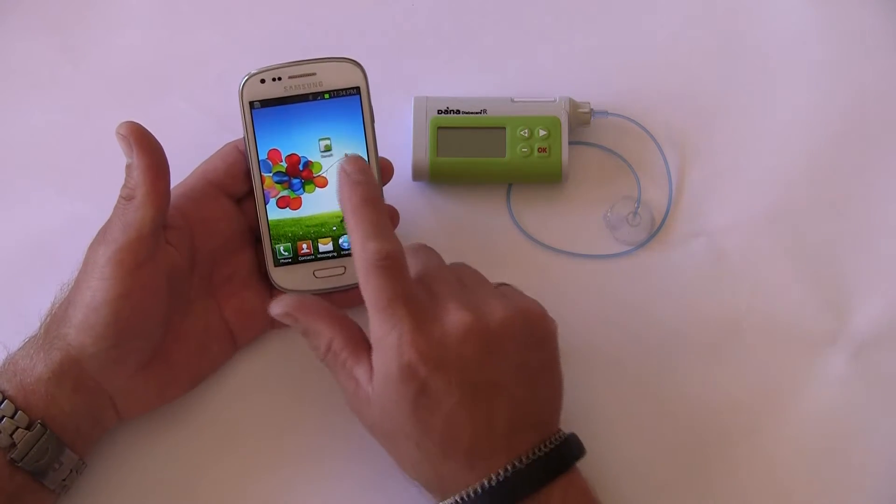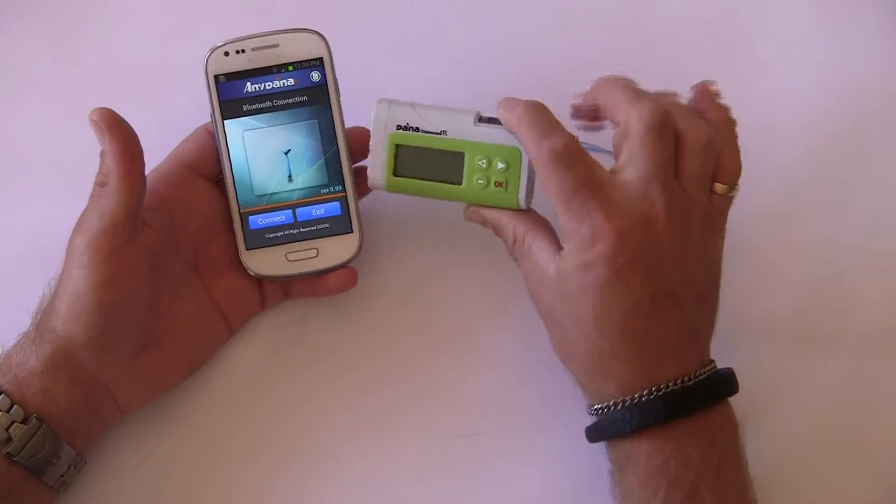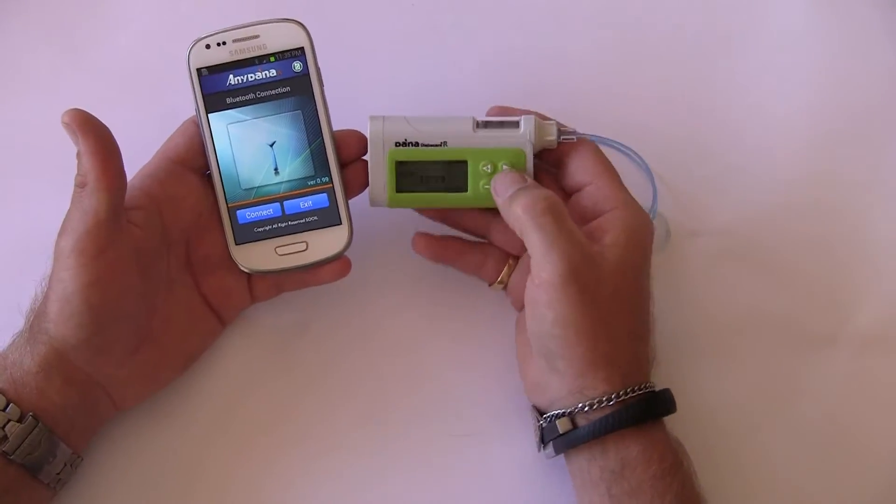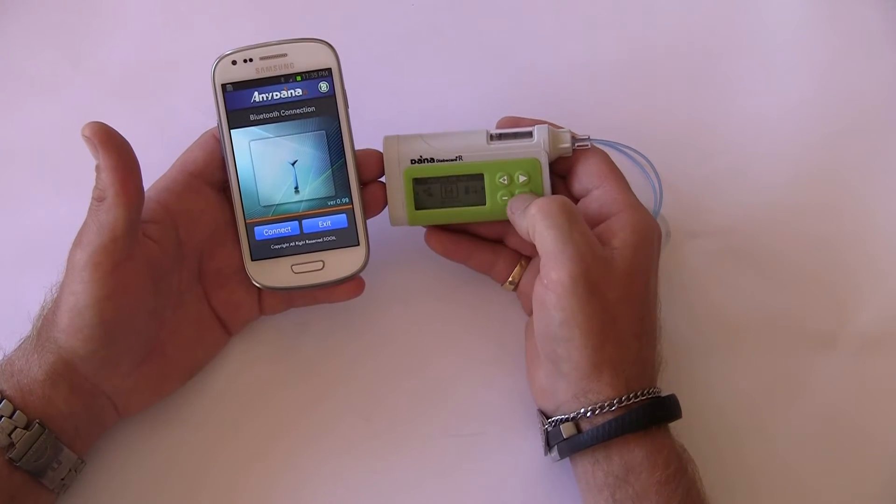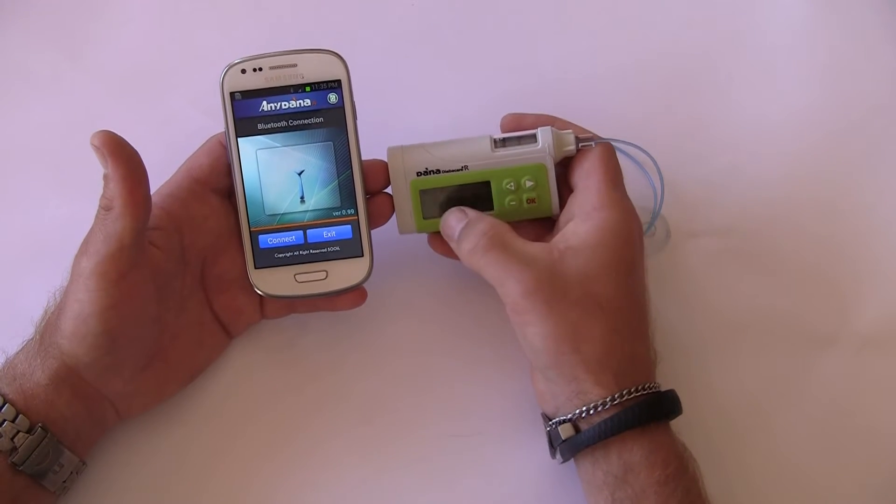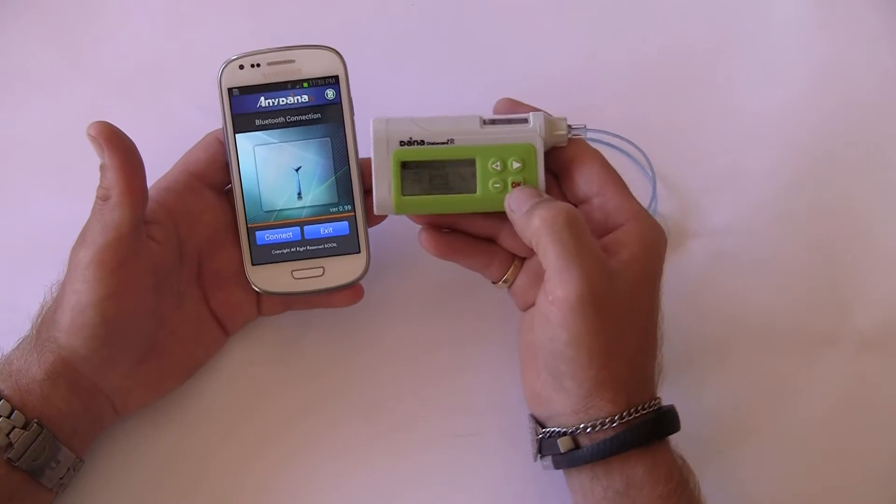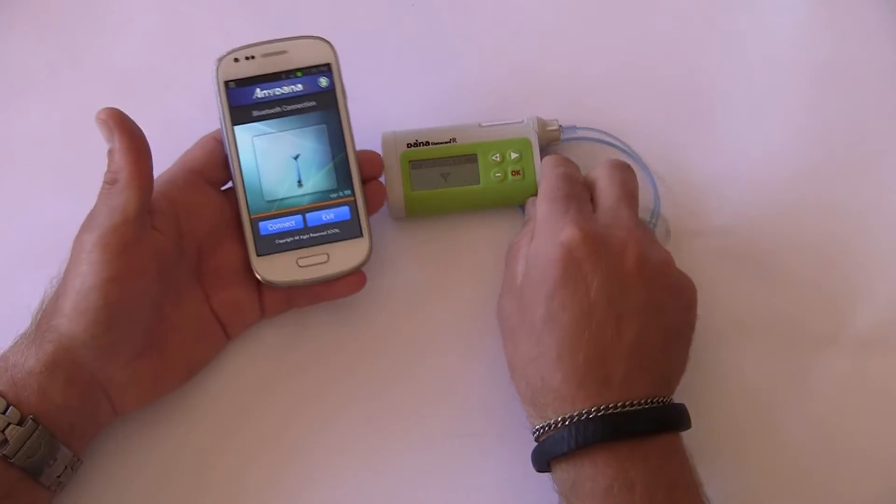We're going to open the software up, and at the same time, we will wake the pump up. In the pump menu, we're going to scroll through to the setting menu, select okay, and then scroll through until you see an icon that says discovery. In the discovery menu, we select okay.